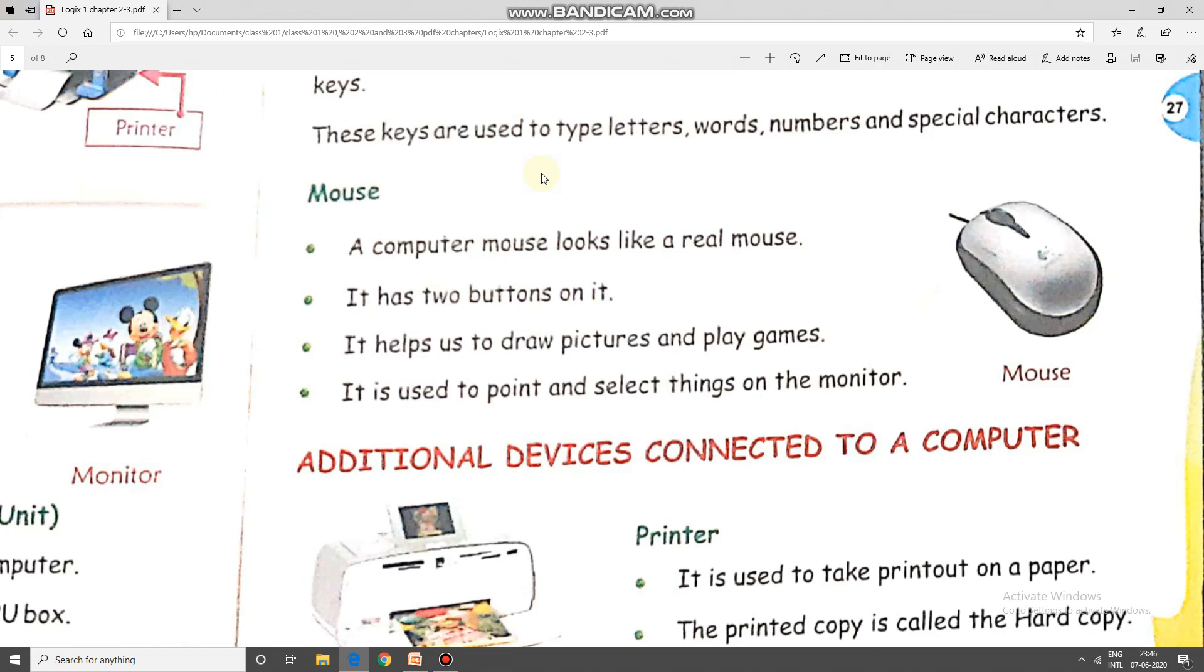With this, we end up with the first part of the chapter. As we have discussed, there are four main parts of the computer. Number one, monitor. Number two, keyboard. Number three, mouse. Number four, CPU.